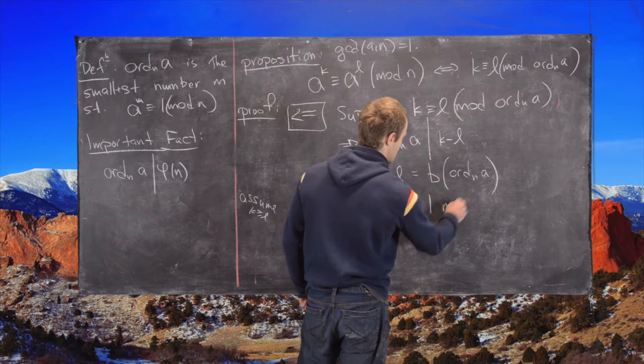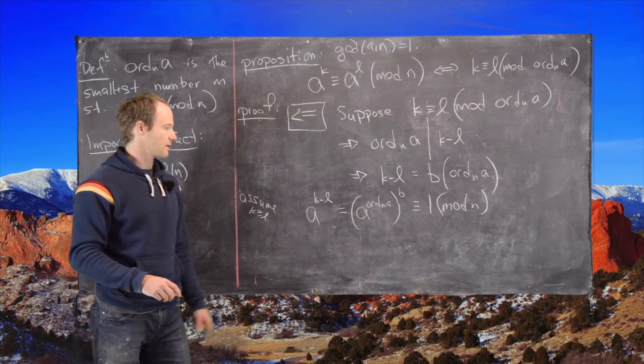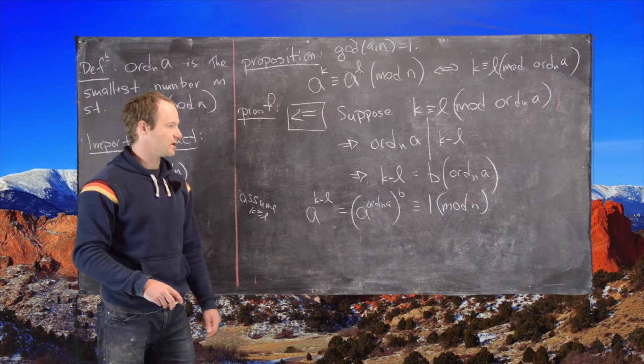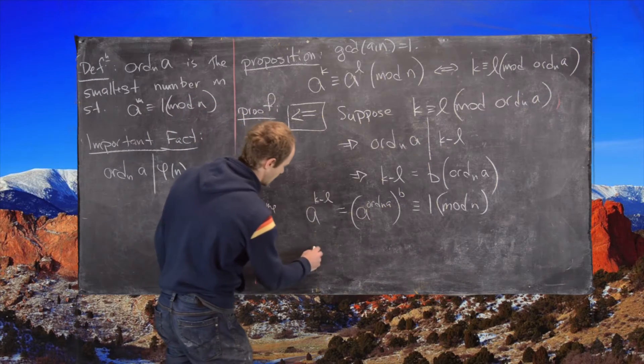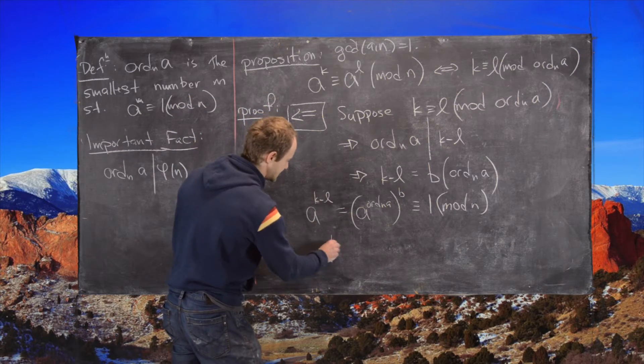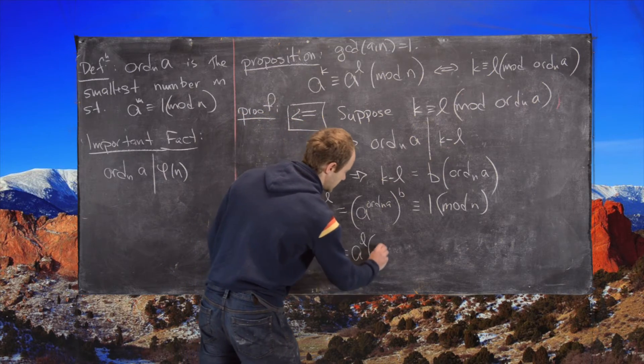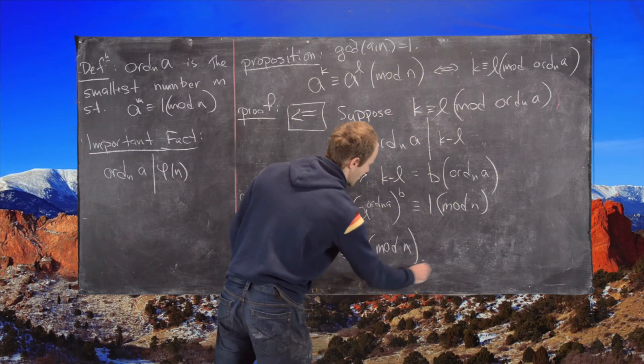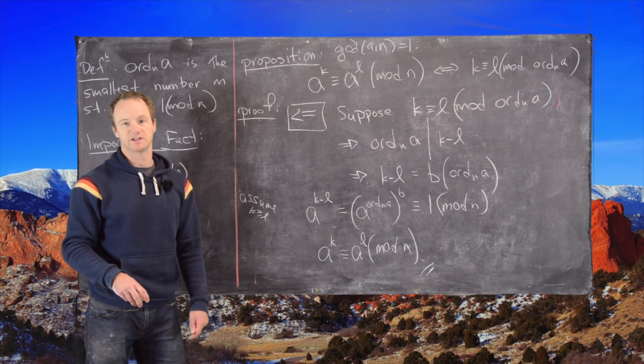So that's congruent to 1 modulo n by the definition of the order. And the next thing we want to do is multiply both sides by a to the l. So if we multiply both sides of this by a to the l, we end up with a to the k on the left hand side and we end up with a to the l mod n on the right hand side. And that finishes this proof.